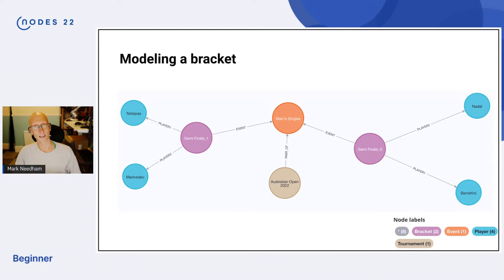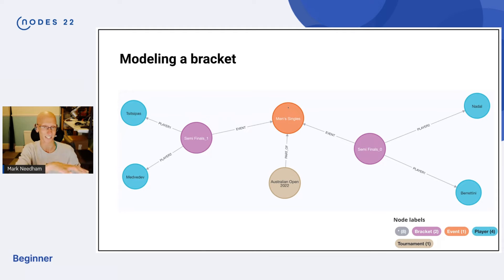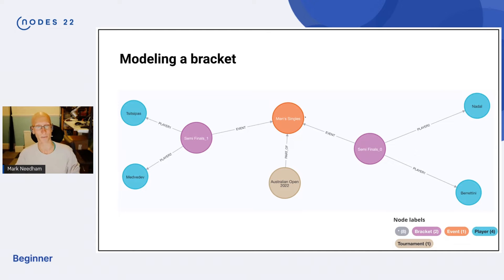We have the players who actually got into that bracket — in this case Berrettini and Nadal. If we model that it's not too tricky — we're more or less mapping it just as I showed. Blue represents players: Tsitsipas and Medvedev on one side, Nadal and Berrettini on the other. We've got the event in the middle — men's singles — and below that the tournament connected to that event. We can have other events too, like ladies singles, also attached to Australian Open 2022.